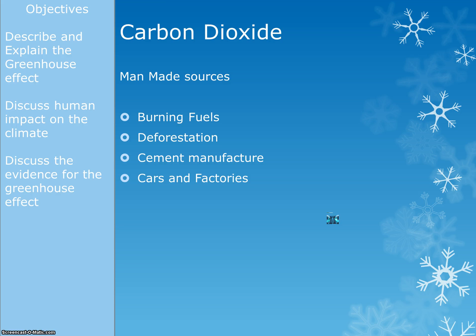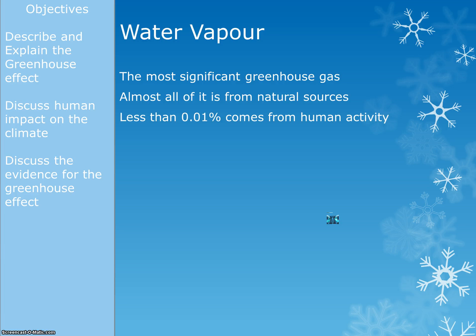So that's carbon dioxide. For those doing the higher paper, you're likely to be given data on these things and have to discuss which is the more important effect — the difference between foundation and higher is largely how they ask you to use data. Moving on: water vapour is the one you probably didn't know about, but is in fact the most significant greenhouse gas, making up about 50% of the greenhouse effect. Most water vapour is naturally occurring, so most of the greenhouse effect is actually a natural effect, with less than 0.01% coming from human activity.